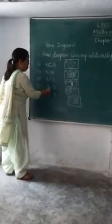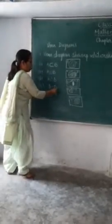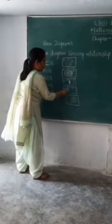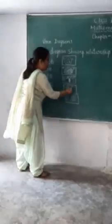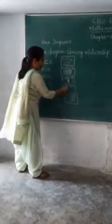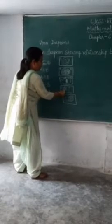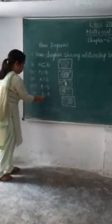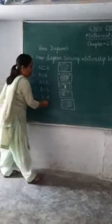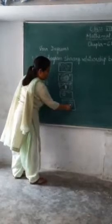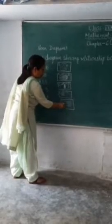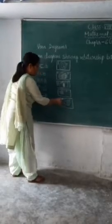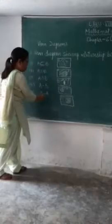The fourth one is A minus B, the difference of set A with set B. All the elements belong to A but do not belong to B. This is the Venn diagram for A minus B. Similarly, for B minus A, all the elements which belong to set B but do not belong to set A are shown — this is the portion of the Venn diagram representing B minus A.